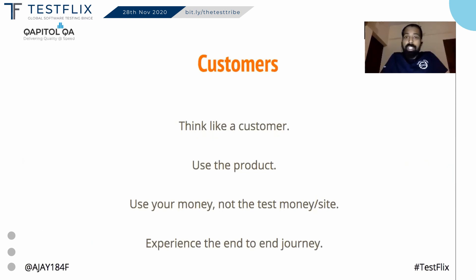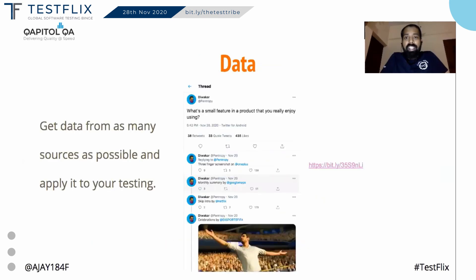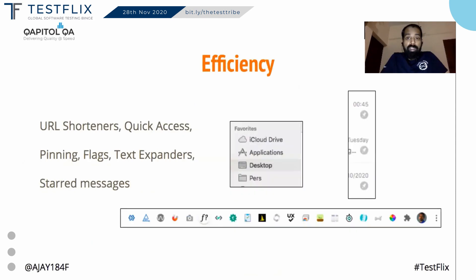C also for Customers. It's easy to say 'think like a customer,' but do you really behave like a customer? Do you invest your own money or test money? D for Data. Data is available all around us — it is up to us as testers to make the best use of it. This is an example from Twitter.